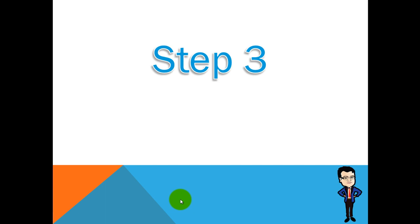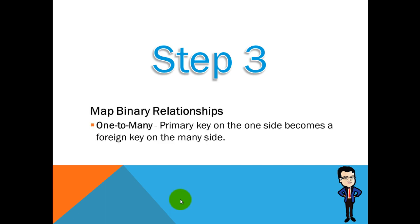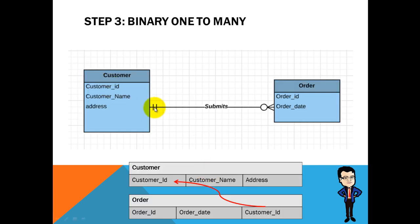Step three: map binary one-to-many relationships. The primary key on the one side entity becomes a foreign key on the many side entity. For example, one customer can submit many orders. The one end is on the customer side and the many end is on the order side, so the primary key of the customer entity becomes a foreign key in the order entity.